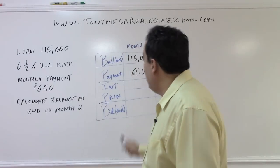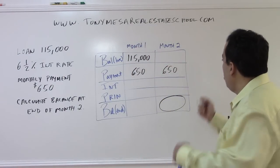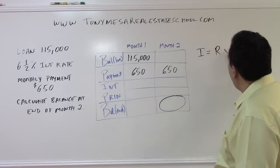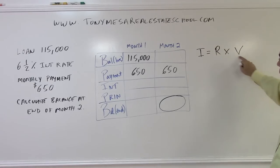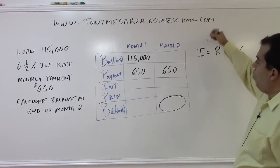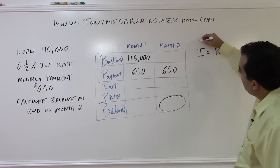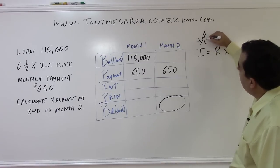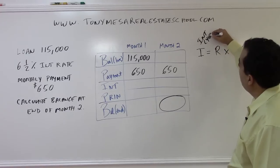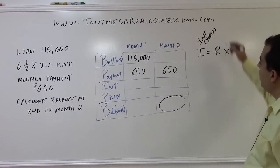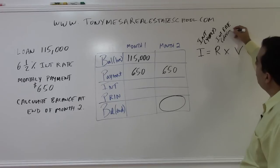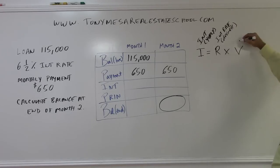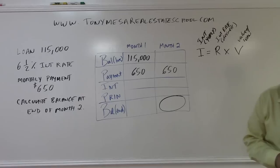The second memory aid is Irv the Banker: I = R × V. The I is the yearly or annual interest. The R is the interest rate expressed as a decimal number. The V is the value of the loan.